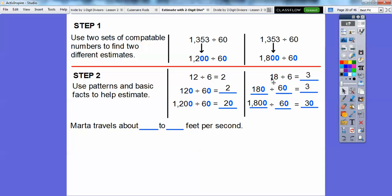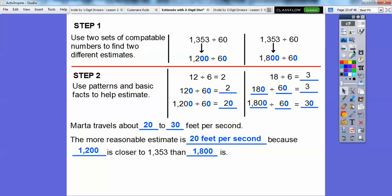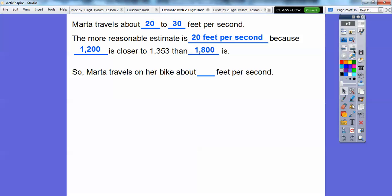So Marta travels about 20 to 30 feet per second. So that's what goes right there. So the more reasonable estimate is, which one's closer to 1,200 or 1,800 closer to this? Looks like 1,200 would be closer. So the answer that would be more reasonable would be the 20 feet per second because the 1,200 is closer to 1,353 feet than the 1,800 is. So Marta travels on her bike about 20 feet per second. Because the 20 feet was a little bit more reasonable on that. In fact, it's a little bit more than that because 1,300 is a little bit more than 1,200. So about 21, 22 would be a good guesstimate, you guys.